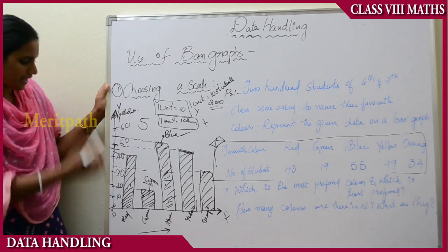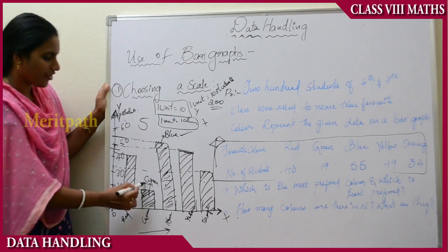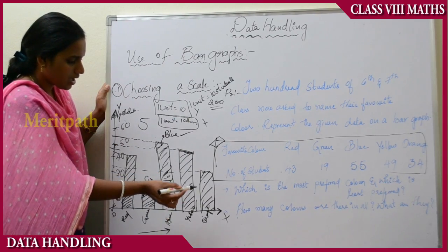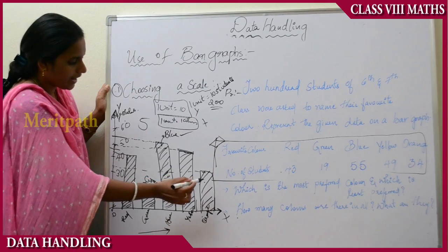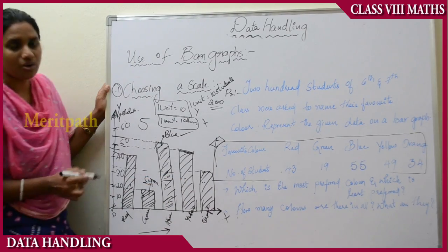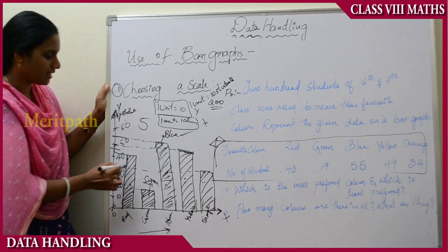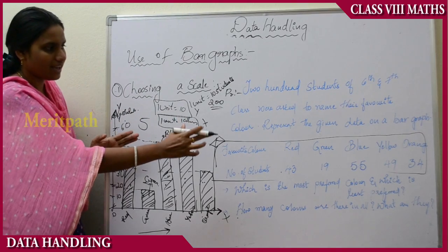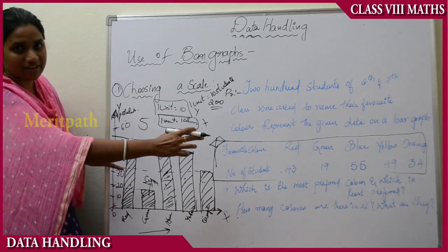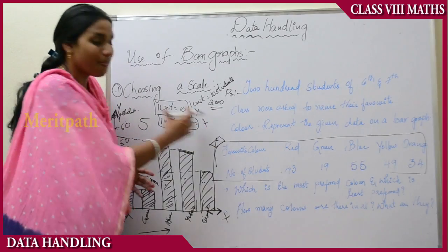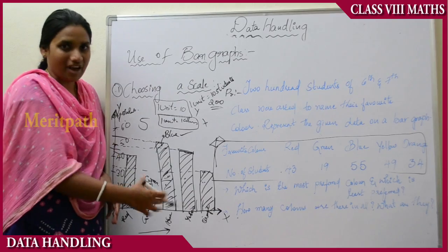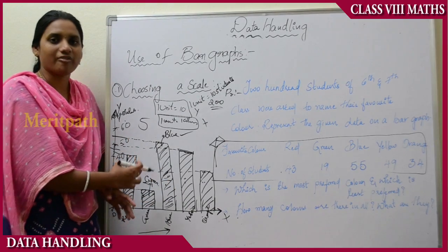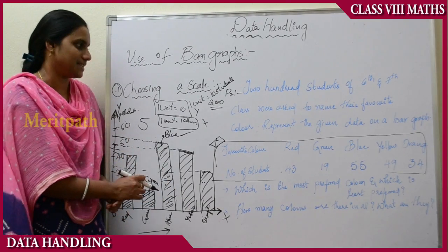The 5 colors are red, green, blue, yellow, and orange. First we take the data given in table form and convert it into a bar diagram. Then we analyze the questions we need to answer. Hope you followed along. Now let us move on to chance and probability.